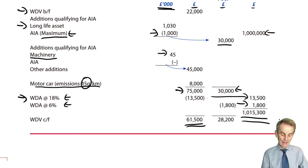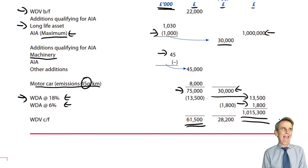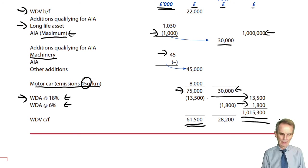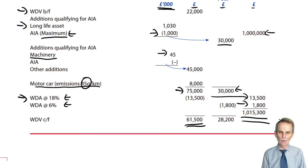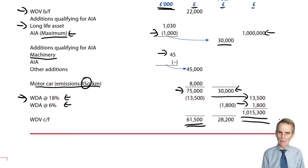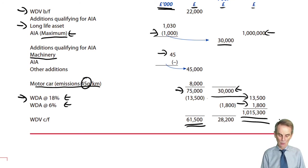This is the sort of question you wouldn't expect to see for an unincorporated trade anyway — huge amounts of expenditure that would probably be a separate standalone Section A Objective Testing 2-mark question.